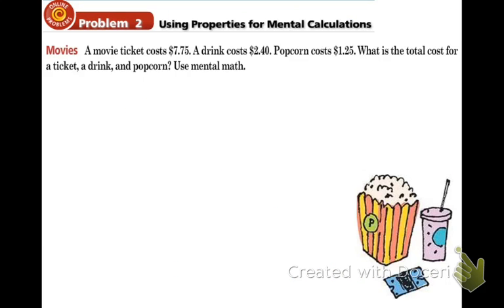In example two, we are going to be using these properties that we just discussed to calculate the total of going to the movie. You buy a ticket, you buy a drink, and you buy popcorn. What's the total of all of that, and you cannot use a calculator? So first of all, let's write this down. We have $7.75 movie ticket, and a $2.40 drink, and $1.25 popcorn.